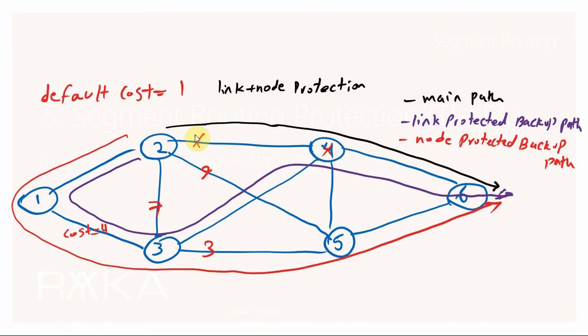The question is: can you run more than one protection in a router? The answer is yes. You can run more than one protection in a router. Note that when more than one protection is enabled in the router, link protection always has the lowest priority, since when the next-hop router is protected, the outgoing link is also automatically protected.